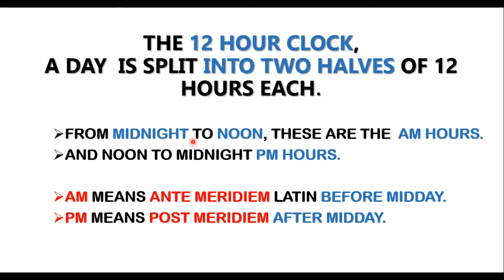From midnight to noon, we start counting time. Noon is also called midday, so there are 12 hours from midnight to noon — these are the a.m. hours. The time from midnight to noon is called a.m., and the time from noon to midnight is called p.m. A.M. stands for 'ante-meridian,' which is Latin for 'before midday.' P.M. stands for 'post-meridian,' also Latin, meaning 'after midday.'